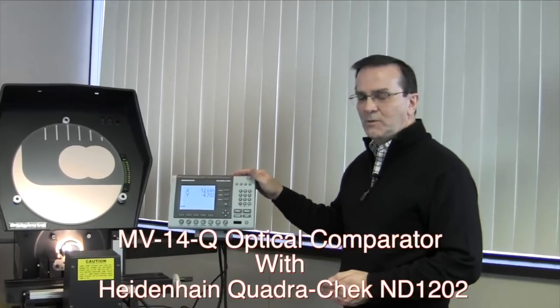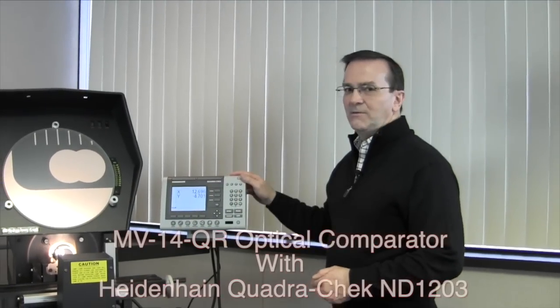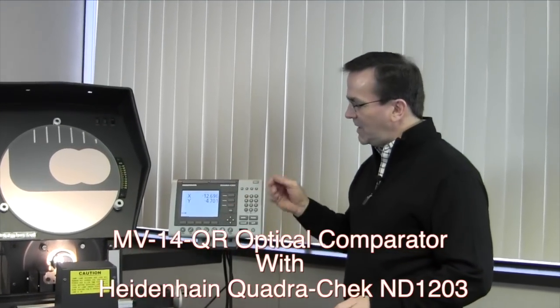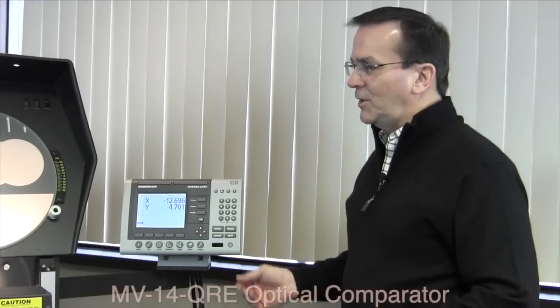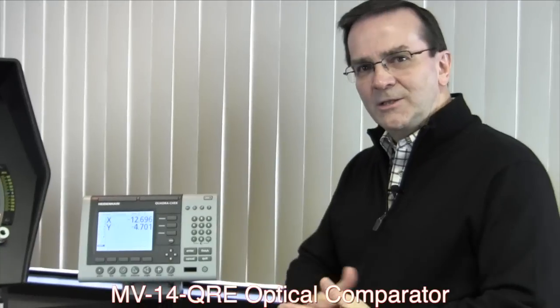So that's our quick little run through of the basic features of the Heidenhain Quadra-Chek. This is a 1202. This is just a two axis. There's a 1203, which is a three axis, and there's also an edge detection version available. Again, Tim Allen, Suburban Tool. This has been a quick run through on the Heidenhain Quadra-Chek 1202. If you have any questions, please feel free to contact us here at Suburban Tool, or look us up on the web at subtool.com. Tim Allen out.